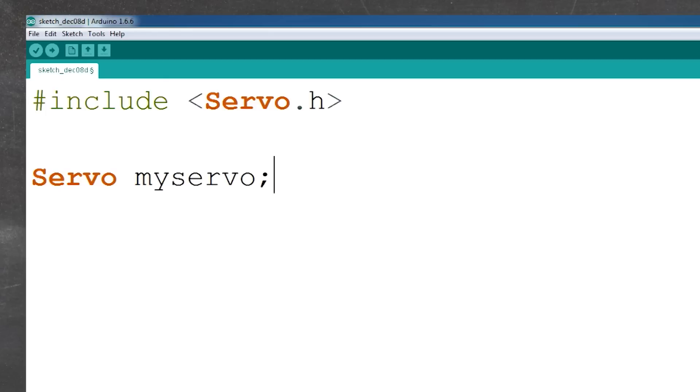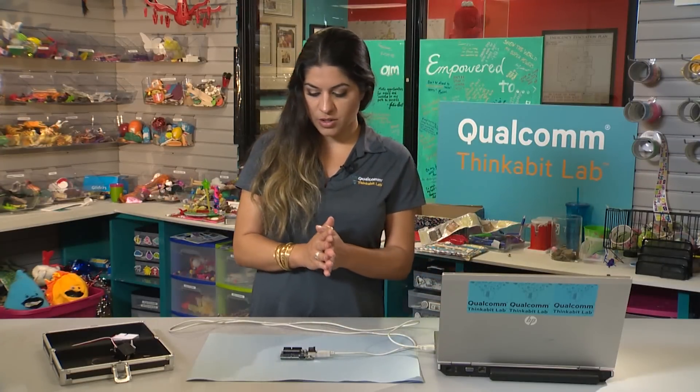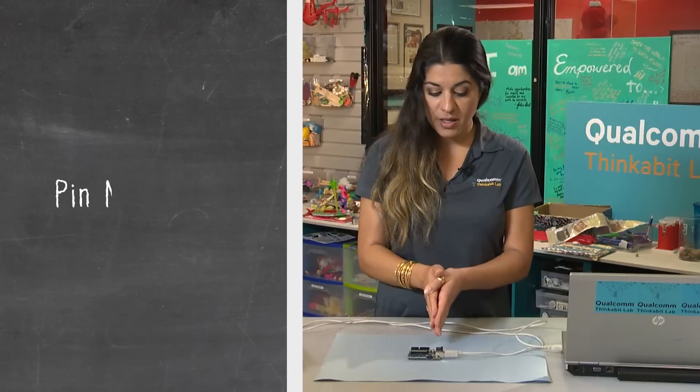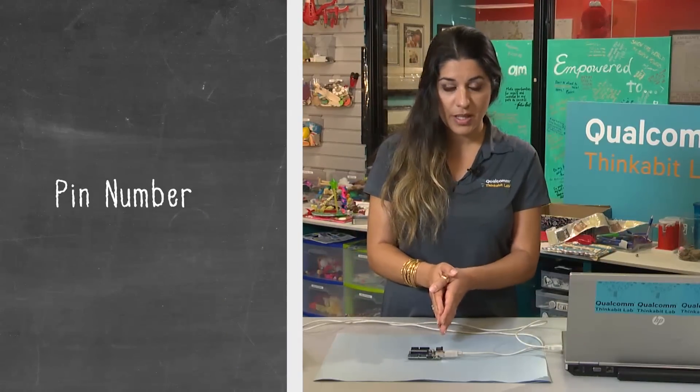What that does is it lets the code know and the Arduino know that we are going to be using a servo. Then what I'd like us to do is actually associate our servo to the right pin number. We want to attach it to the right pin.